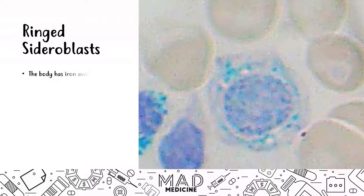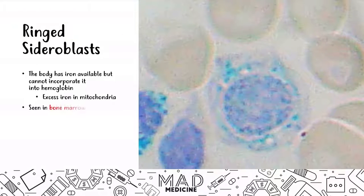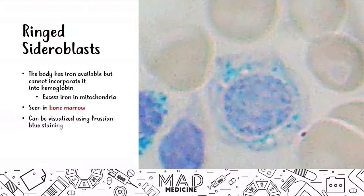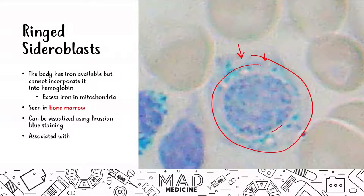Ring sideroblasts occur when the body has iron available but cannot incorporate it into the hemoglobin molecule. This is due to excess iron in mitochondria and is usually seen in the bone marrow. You can visualize this with Prussian blue staining, and it is associated with sideroblastic anemia. The ring sideroblast shows a ring occurring around the nucleus with an empty space inside.